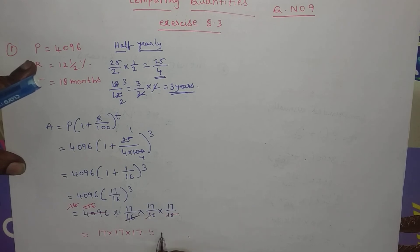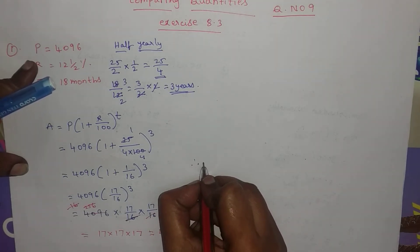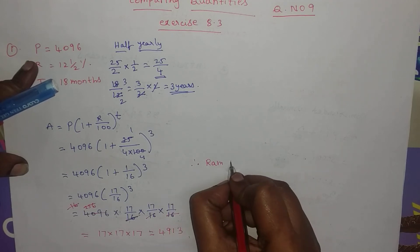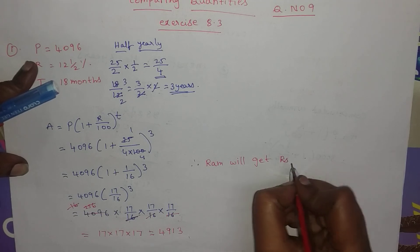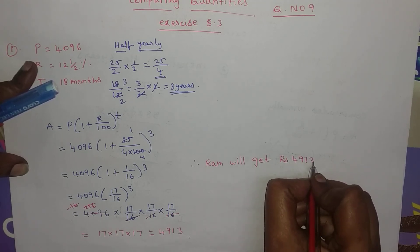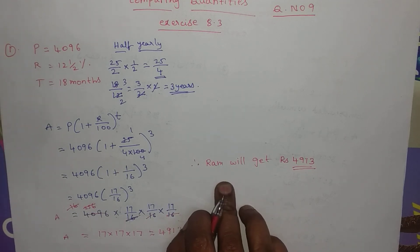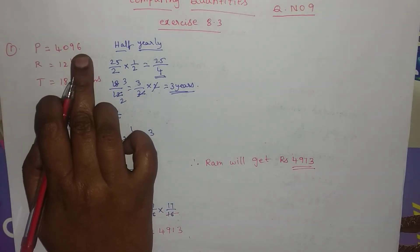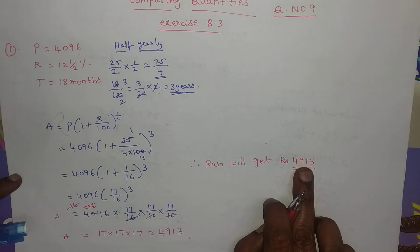17 cubed equals 4913. Therefore Ram will get Rs. 4913. The principal was 4096, and the amount is 4913.